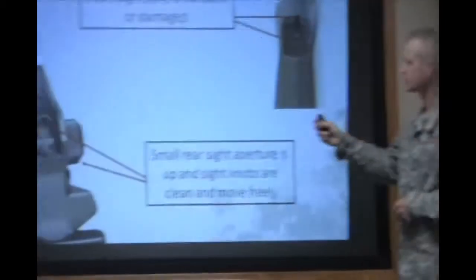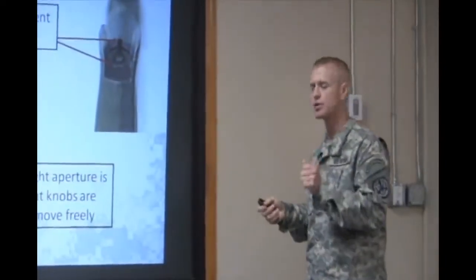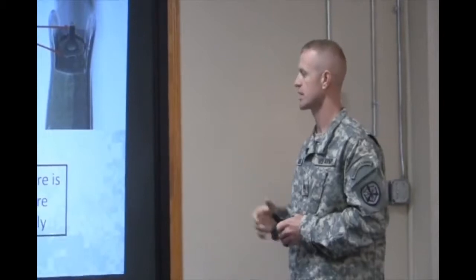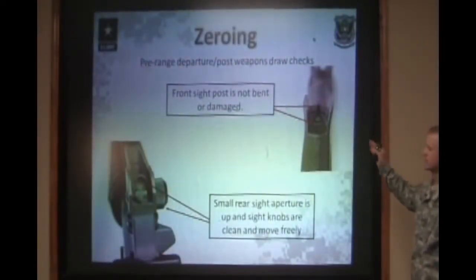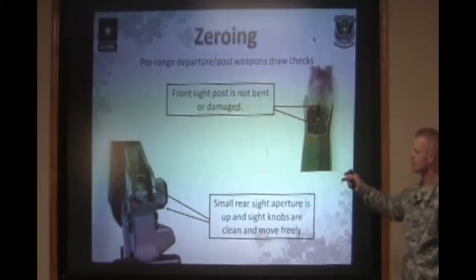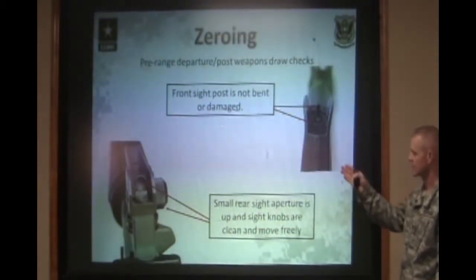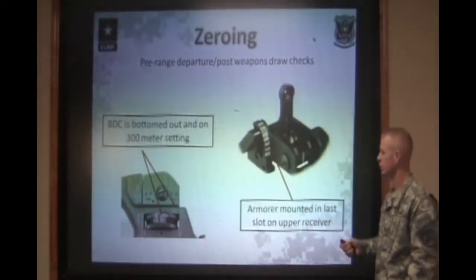Now we're going to move back to the rear sight. Make sure that the rear sight aperture — the small aperture — is up. Make sure it's centered in the rear sight housing itself and make sure it moves freely and is clean, not dirty or have anything caked in there, or been dropped. Once we've confirmed that the front sight post is not damaged and the rear sight moves freely through its entire range of travel and is centered, we need to check that the elevation wheel is in the correct position.